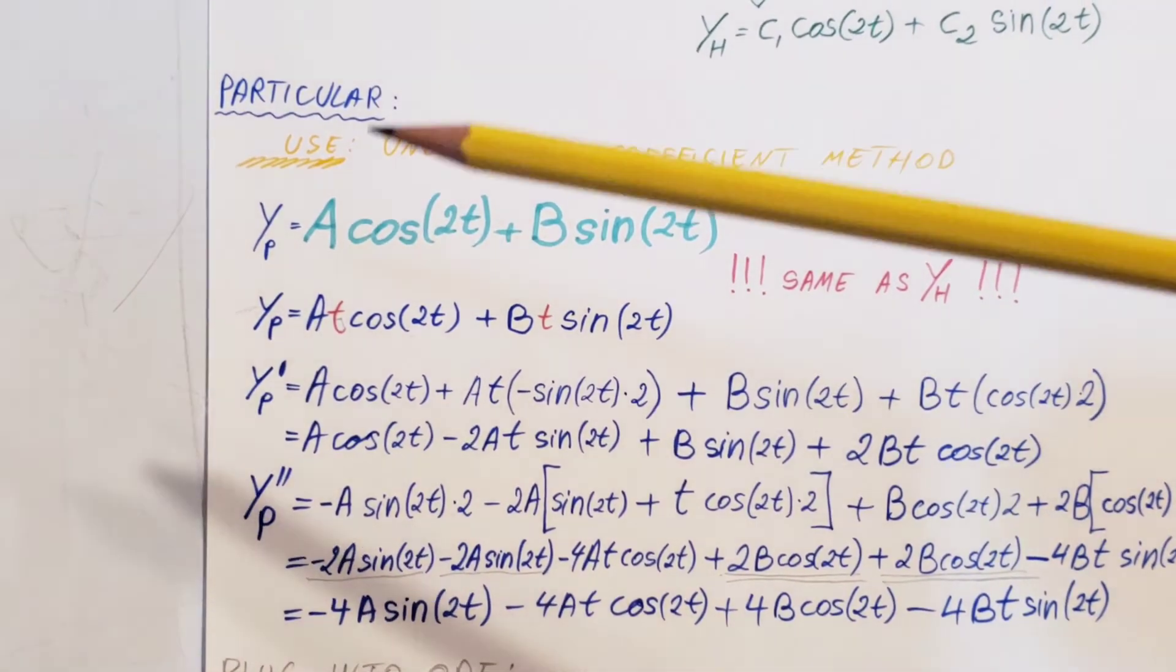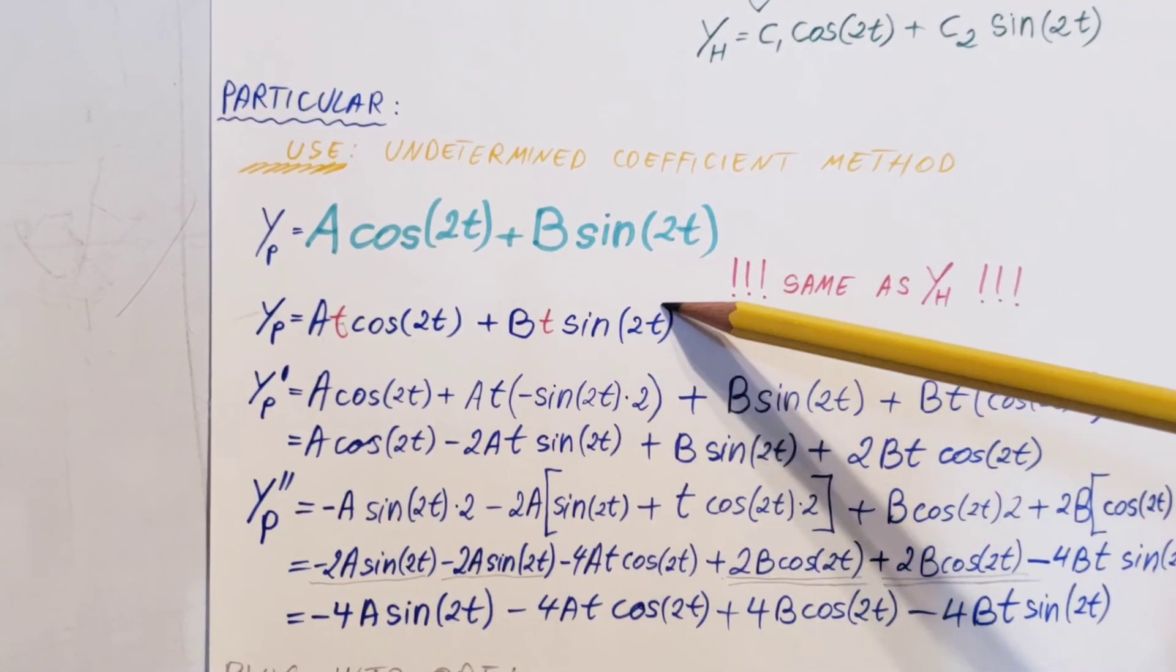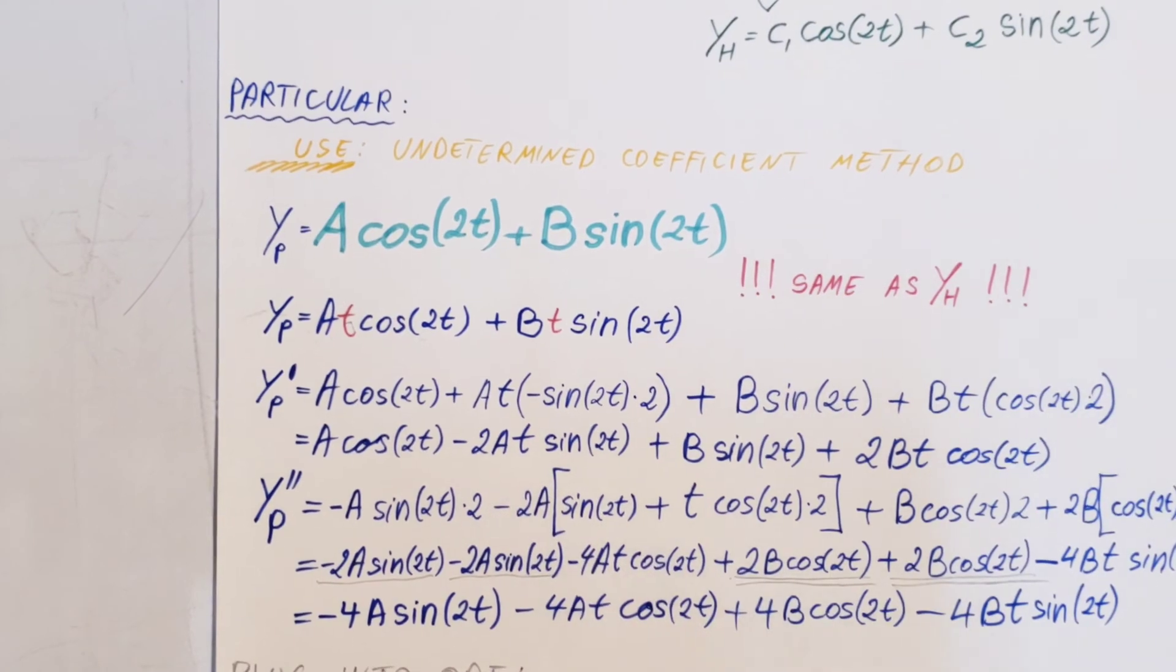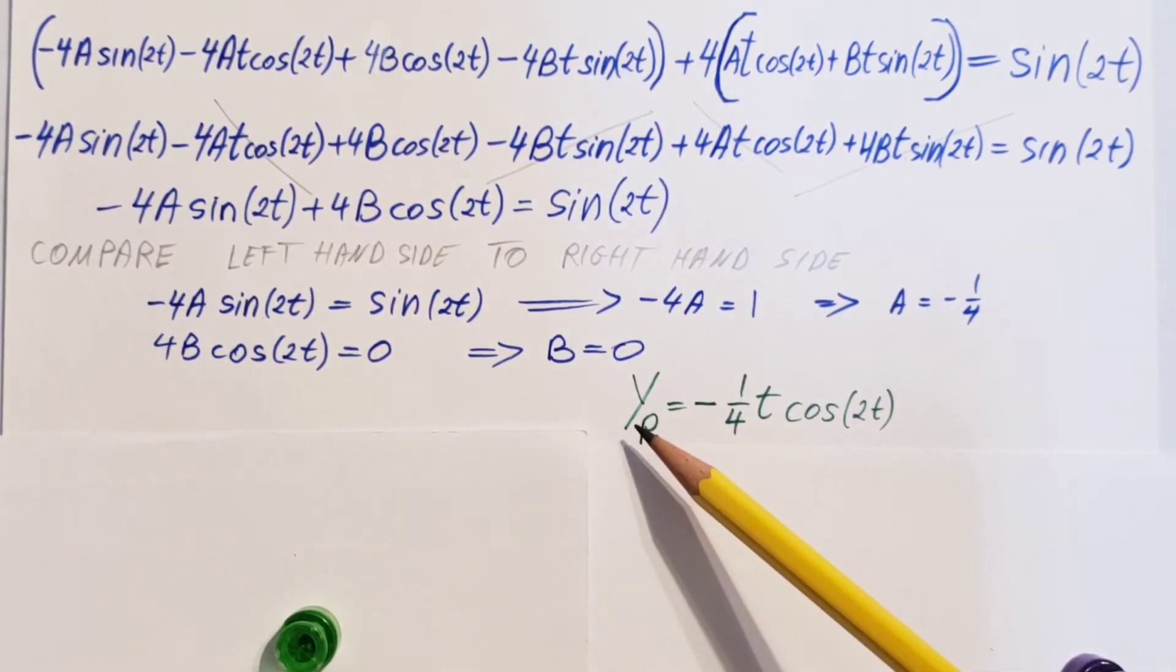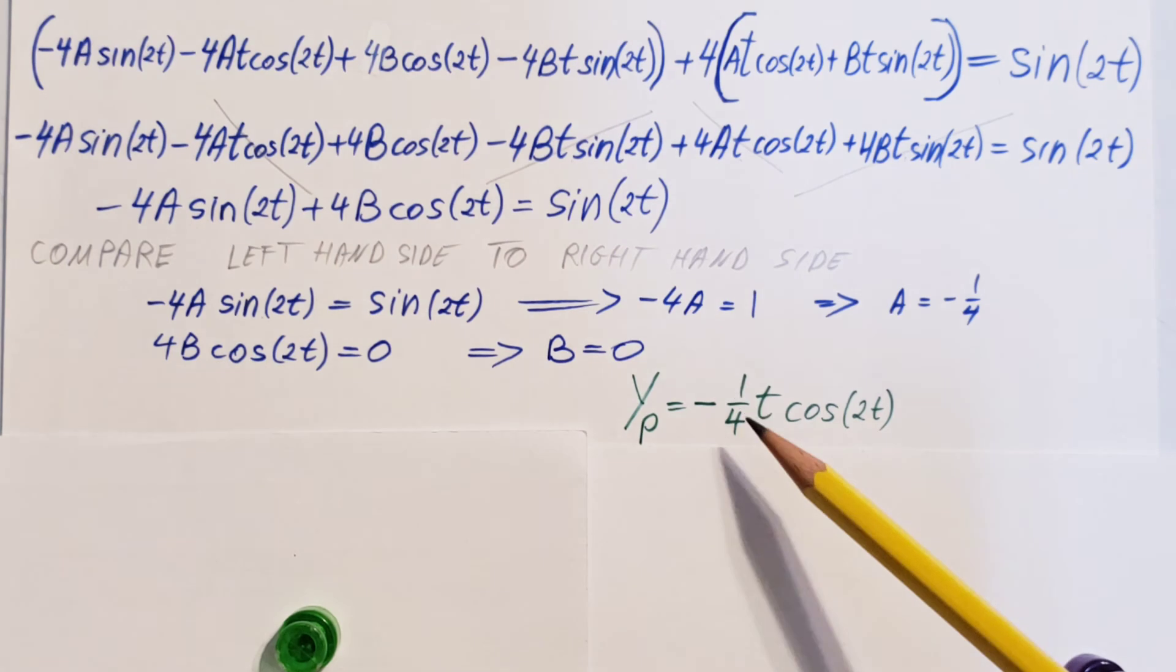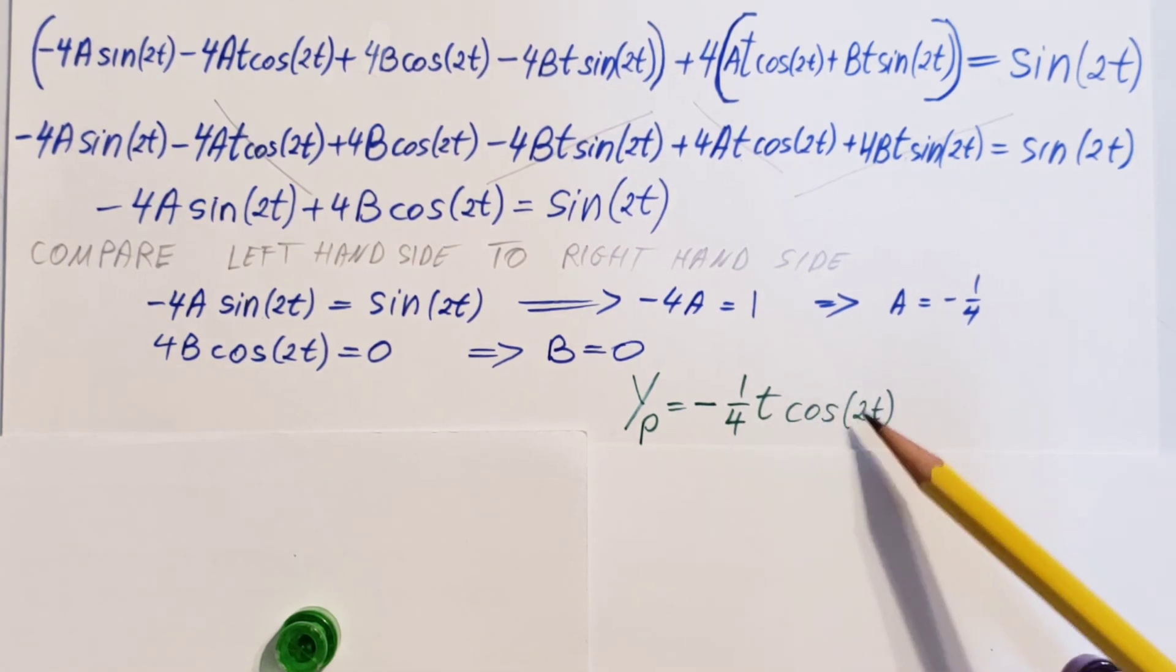Now that we found a and b, we can come back and plug back into our guess. Therefore, our particular solution is negative 1 fourth t cosine 2t.